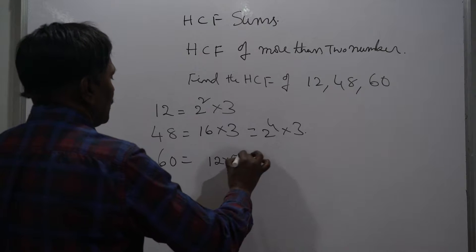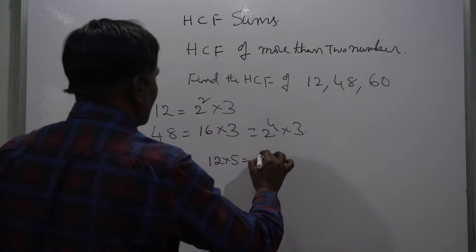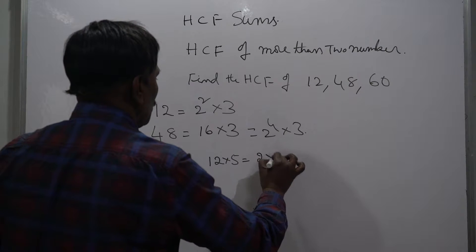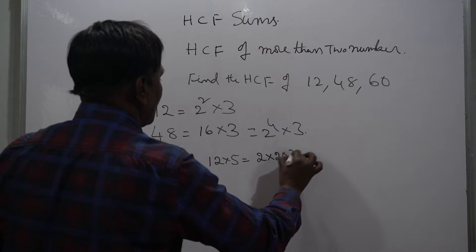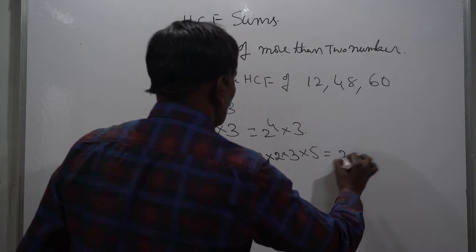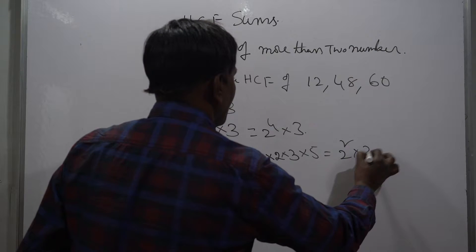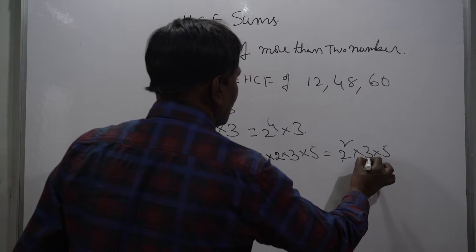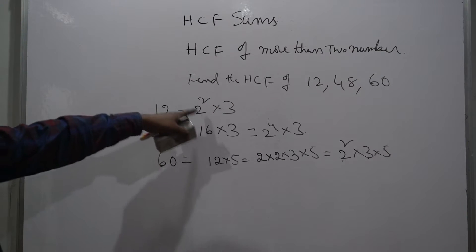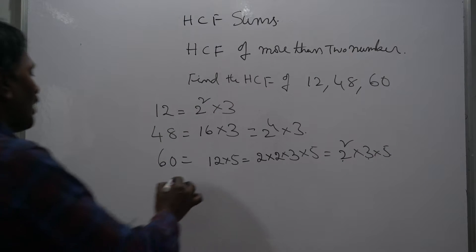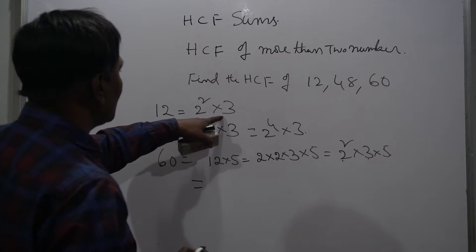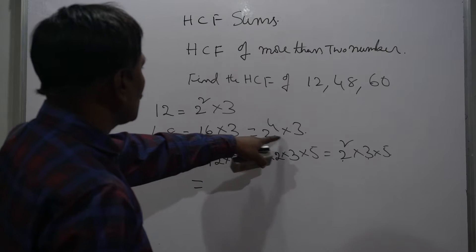Next, 60 can be written as 12 into 5, and this can be written as 2 into 2 into 3 into 5. So this can be 2 squared times 3 times 5. These are the product of the prime factors.